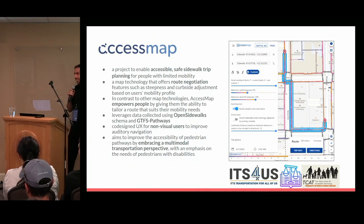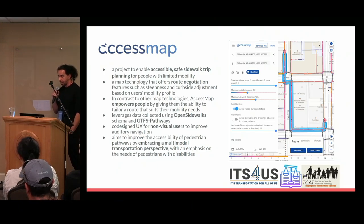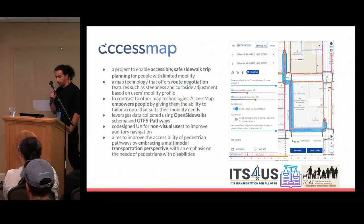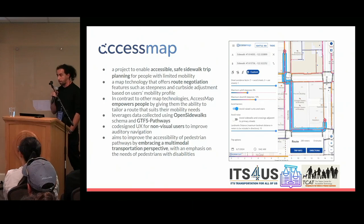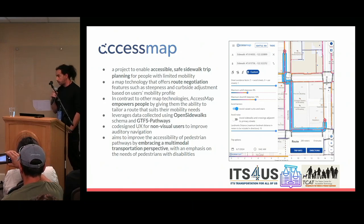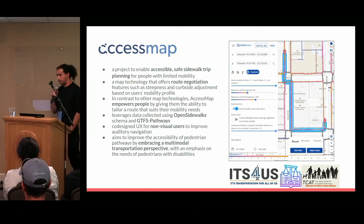AccessMap is an application that uses OpenStreetMap data. It's a routing and trip planning software designed around accessibility. It offers route navigation features and lots of preferences to get the optimal route for the user based on their mobility limitations. It's currently built on top of OpenStreetMap and is completely compatible with the tagging and line geometries of OpenStreetMap.